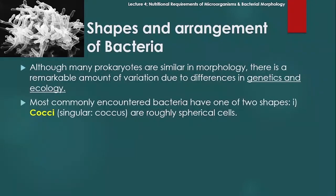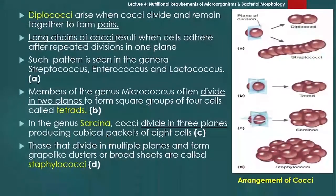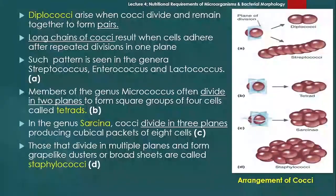Bacteria کے most commonly encountered shapes میں سب سے پہلے ہیں cocci — cocci plural ہے، singular ہے coccus — which are roughly spherical cells۔ Diplococci arise when cocci divide and remain together to form pairs — یعنی دو circular bacteria اکٹھے موجود ہوں تو ایسے bacteria کو diplococci بولتے ہیں۔